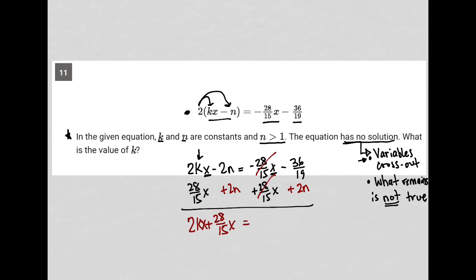So I'd have that equals negative 36/19 plus 2n. Again, n is some other constant that we don't know.